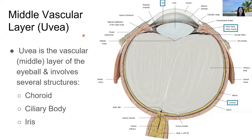The middle vascular layer is referred to as the uvea, with different components in different parts of the eye. In the outer portions deep to the sclera, the uvea contains the choroid layer. In the anterior part, it contains the ciliary body — also called the ciliary muscle because it's a smooth muscle that can change the shape of the lens — as well as the iris.